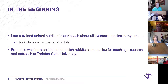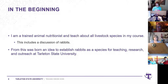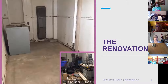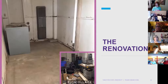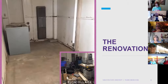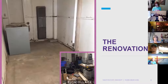We wanted to establish rabbits as a species for teaching, research, and outreach. We have many students from urban or suburban backgrounds — small animals don't scare them as much, so it's a way to ease them into animal sciences before putting them with hogs or cattle. We started with nothing. The university gave us a barn at the Ag Center that hadn't been used in years — it had been a chicken barn, a show hog barn, and most recently storage.